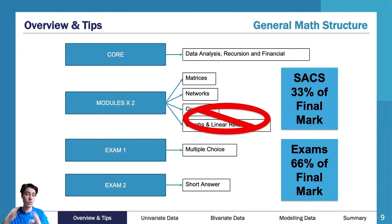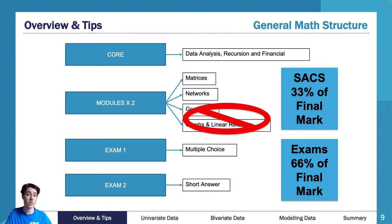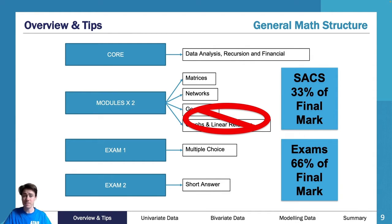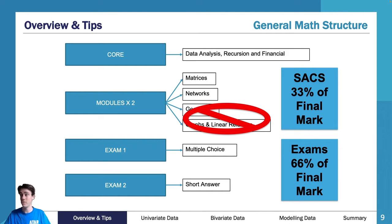You have four topics overall. Data Analysis is the first and is worth double all the others — think of it as 40% of the content. Each of the other three topics is worth 20%. So you have Data Analysis first, which is your biggest; Finance, which is arguably the most difficult and will be covered in the autumn lecture series; then Matrices and Networks.